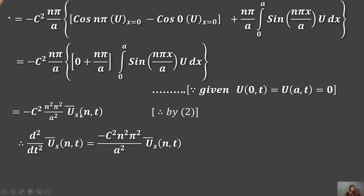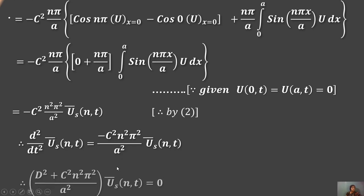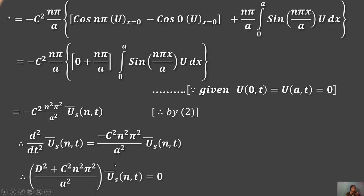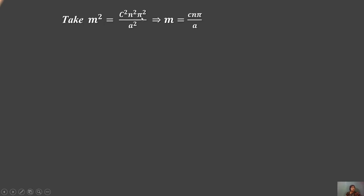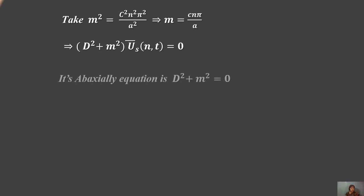This gives the ODE: d²Uˢ(n,t)/dt² = −c²·(n²π²/a²)·Uˢ(n,t). Rearranging: (d²/dt² + c²n²π²/a²)·Uˢ(n,t) = 0. Let m² = c²n²π²/a², so m = cnπ/a. This becomes (d² + m²)·Uˢ = 0.